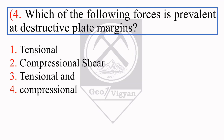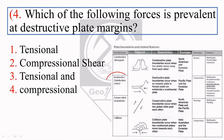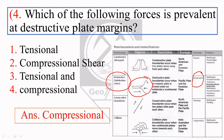The next question is: which of the following forces is prevalent at a destructive plate margin? A destructive plate margin we can also call the convergent plate margin. At the time of a convergent plate margin or subduction zone, the two plates move towards each other, and the stress applied is compressional. So the right answer is compressional.